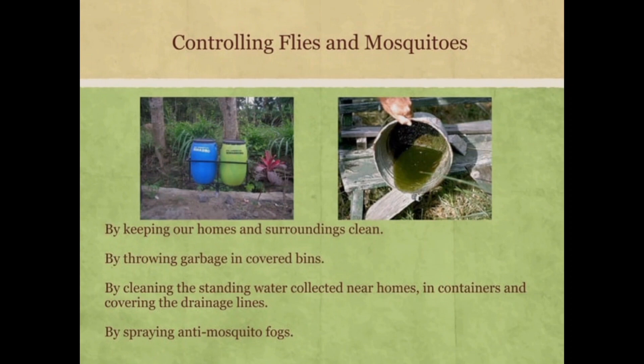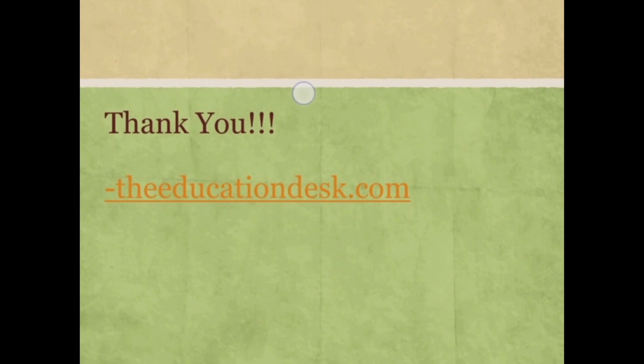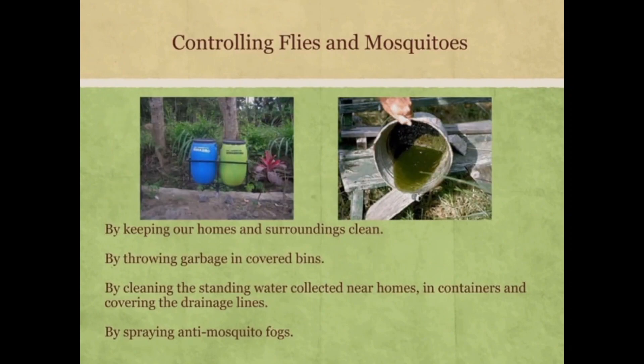We can control flies and mosquitoes by keeping our homes and surroundings clean, throwing garbage in covered bins, cleaning standing water near homes, covering containers and drainage lines, and spraying anti-mosquito repellents. Thank you for watching this video — please like, share and subscribe!